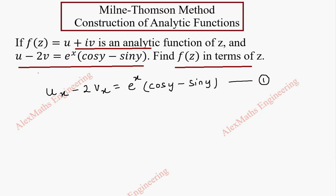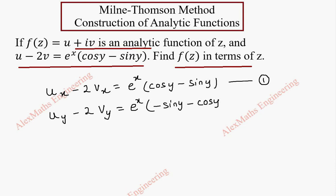Now we do the partial derivative with respect to y. So uy minus 2vy equals e^x, which is a constant kept as is. The derivative of cos y is minus sin y, and the derivative of sin y is cos y, and there is already a minus sign, so we get minus cos y. This is our second equation.